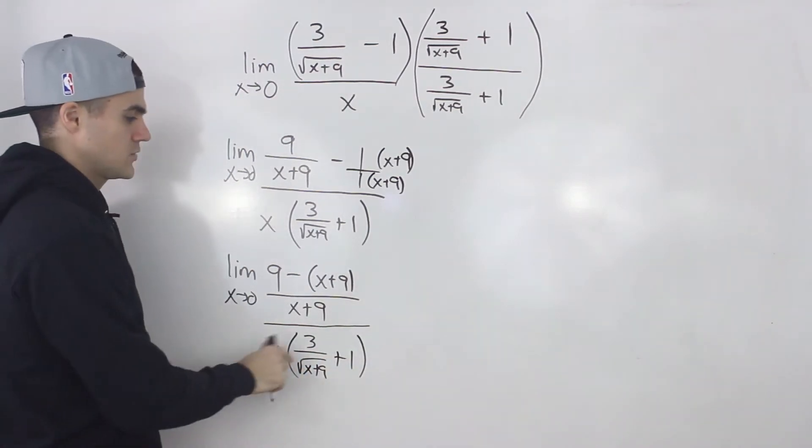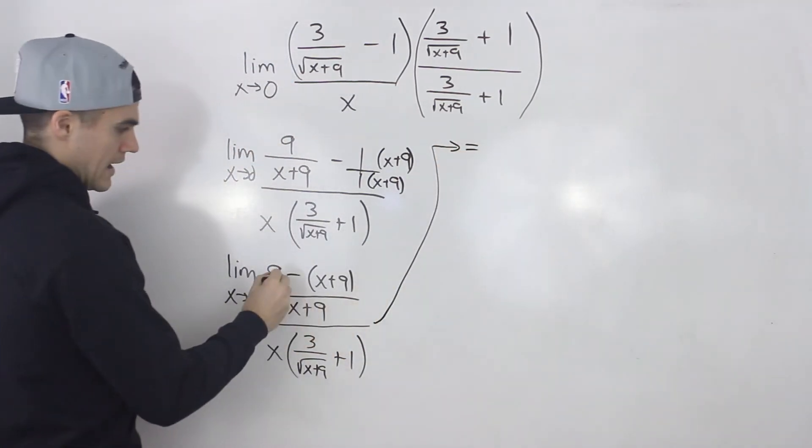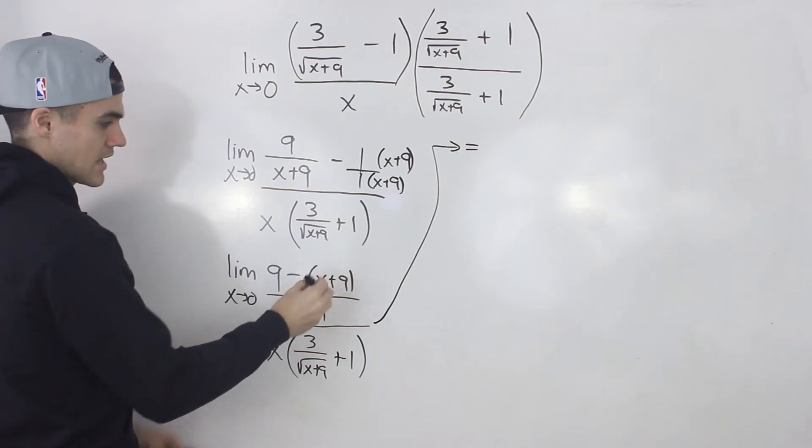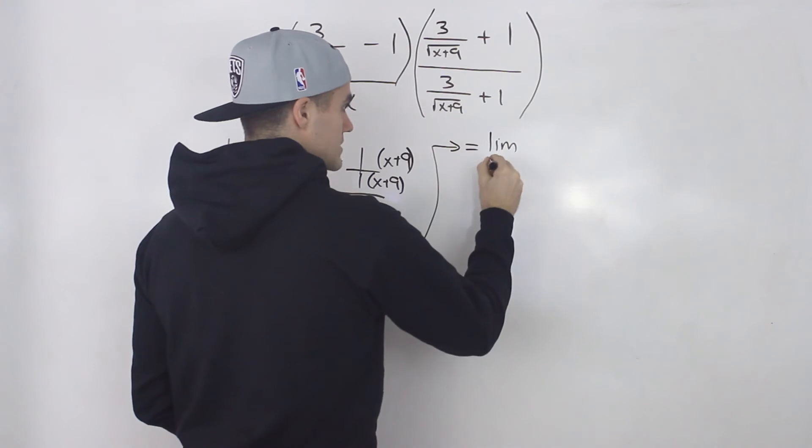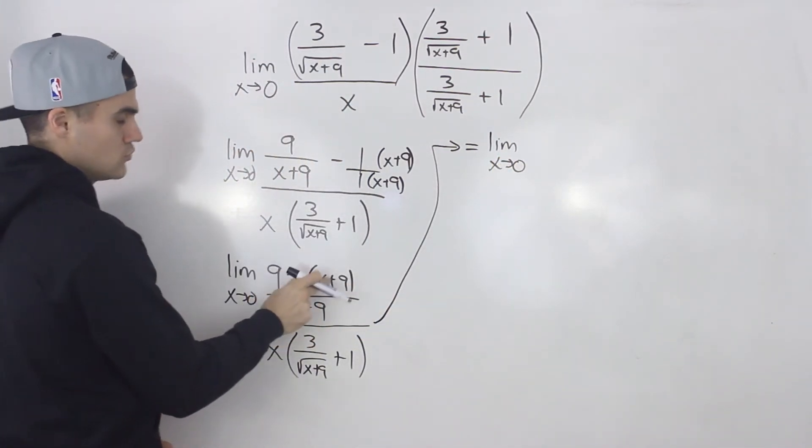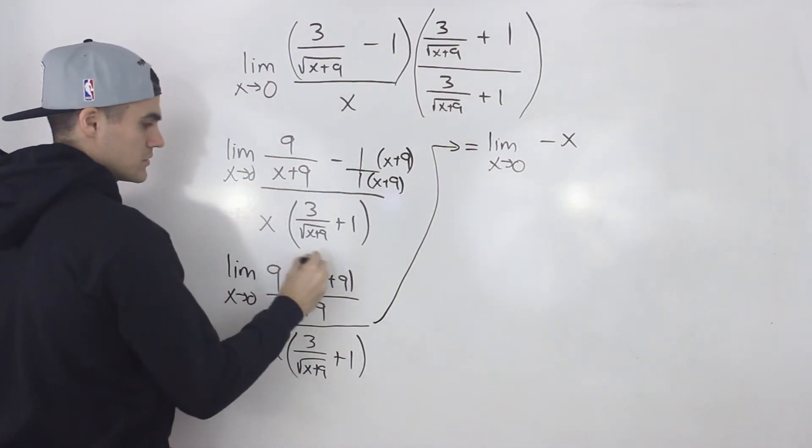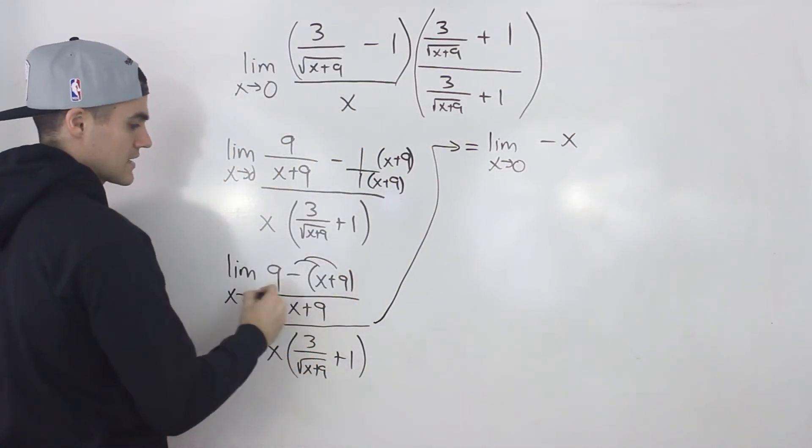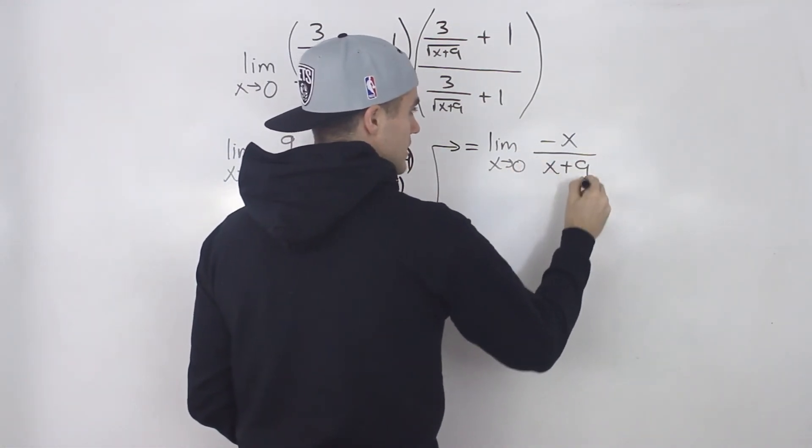So then continuing this up here, 9 minus x minus 9. Notice that the 9s will cancel out. So we'll be left here with the limit as x approaches 0. The numerator will just be negative x, right? When we distribute that negative inside the bracket, 9s cancel out. That's going to be all over x plus 9.